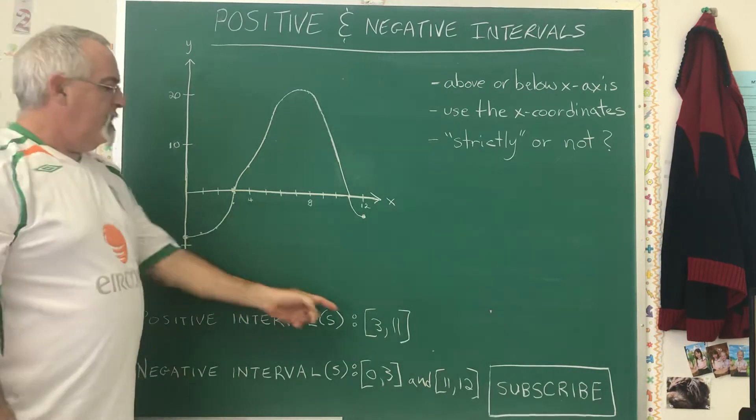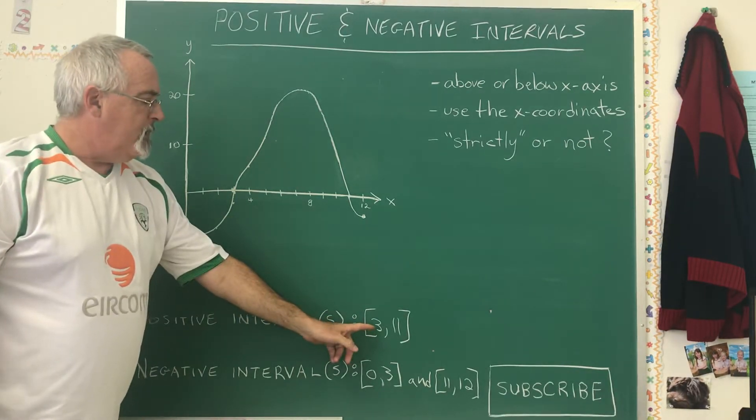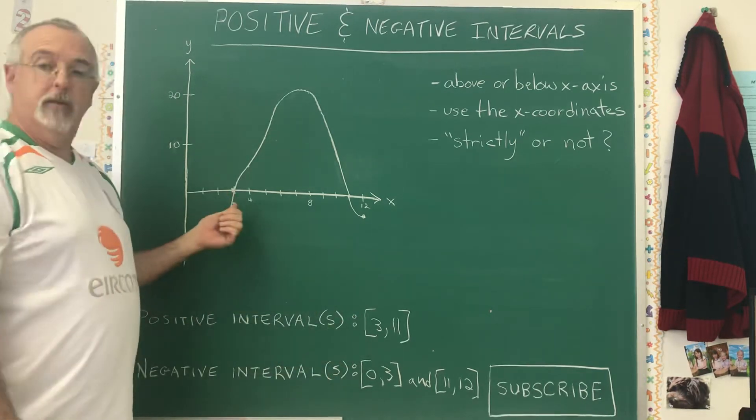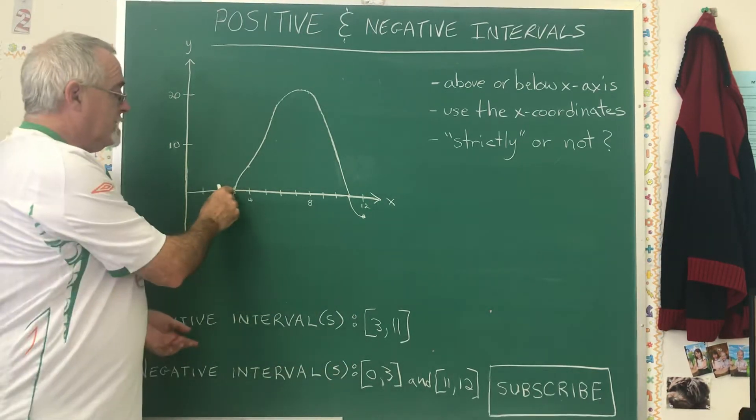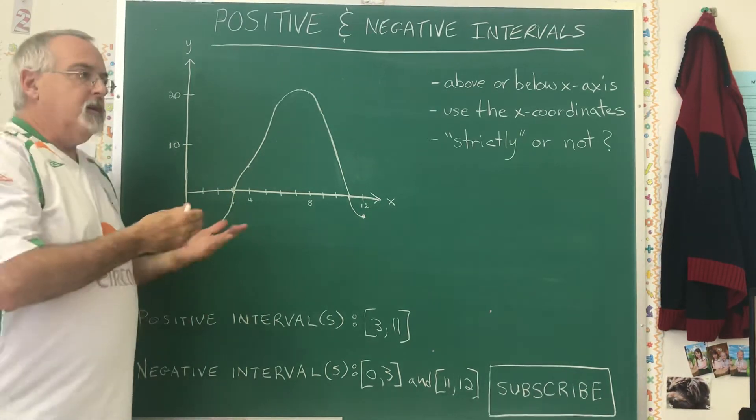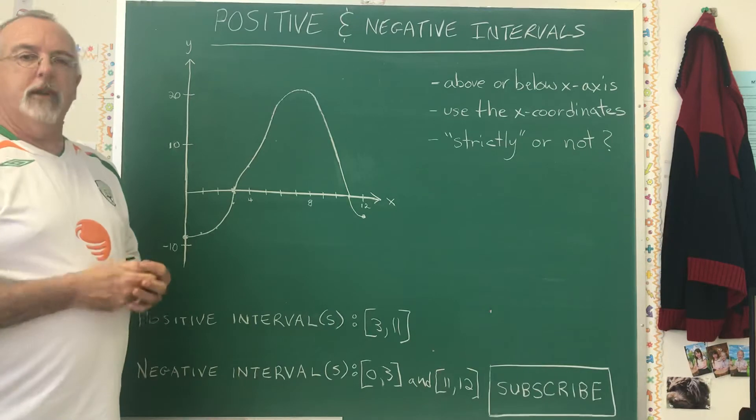Now, why is x equals 3 included in both the positive interval and the negative interval, when really, where x equals 3, y equals 0, and you could say the function isn't positive or negative. This is just the convention of mathematics.